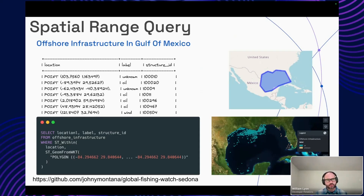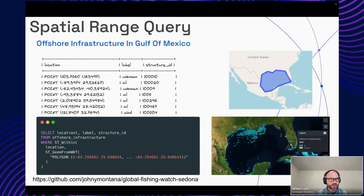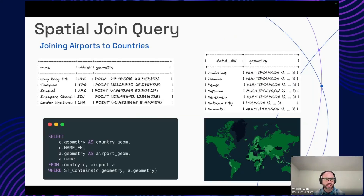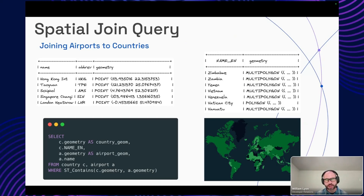The first is a spatial range query. Here we're searching for point geometries that fall within a polygon — roughly approximating the Gulf of Mexico. In our SQL statement, we're selecting the location of structures from our offshore infrastructure table where ST_Within — where the geometry of these points is within this polygon. Another spatial query is the spatial join query, where we have two tables: a table of airports with point geometries and country boundaries with polygons. We join these tables where the geometry of the airport is within the geometry of the country, then do an aggregation — a group by count of airports within each country.